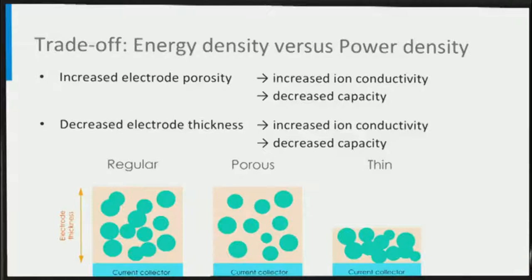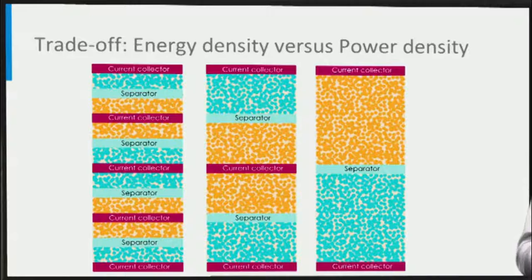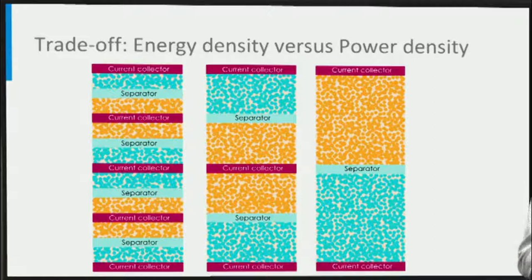Effectively, both strategies will increase the power density, leading to a shorter charging time, but at the expense of the energy density, demonstrating the typical trade-off between power density and energy density. As a consequence, a lithium-ion battery designed for high power density will have thinner electrodes compared to one designed for high energy density. On the left we see a high power density battery, and on the right we see a high energy density battery.